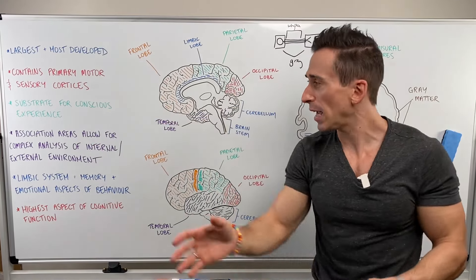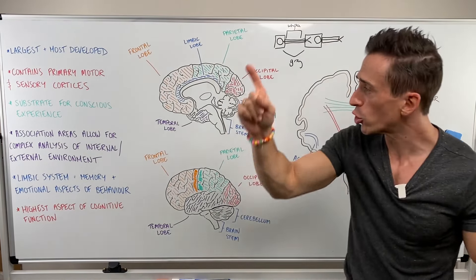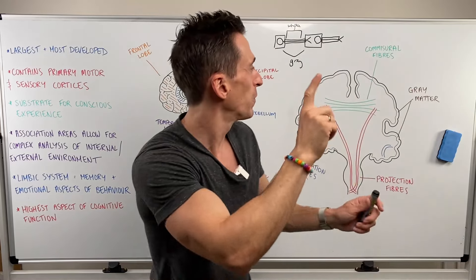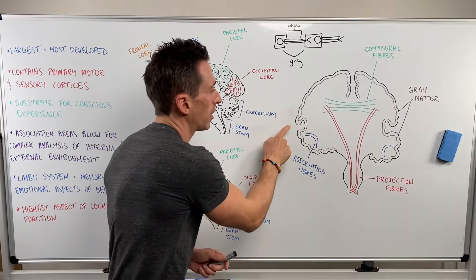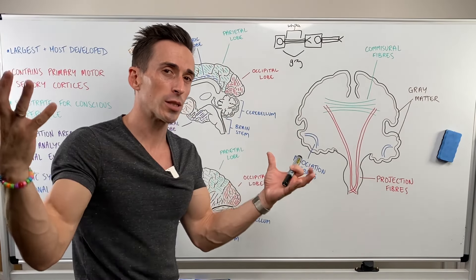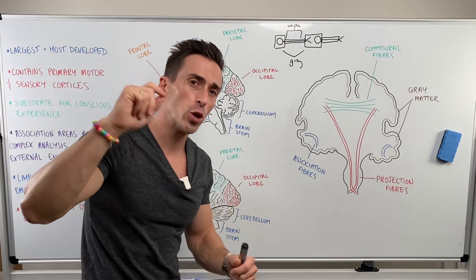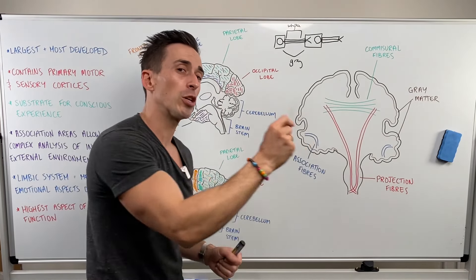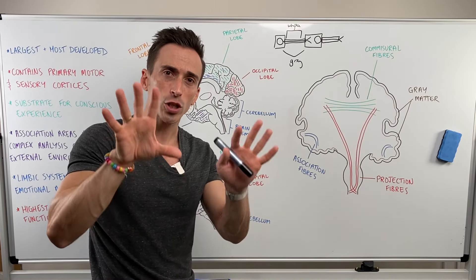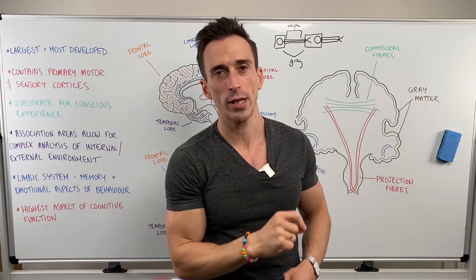The cerebral hemisphere is the substrate for conscious experience. When we become consciously aware of anything, it's because it's gone to the cortex of the cerebral hemispheres. If you want to be consciously aware, it needs to get to that one to five millimeter thick layer. More deeper areas of the brain may receive sensory information or make decisions about motor movement, but you will not become consciously aware of it unless it reaches that outer cortical layer.